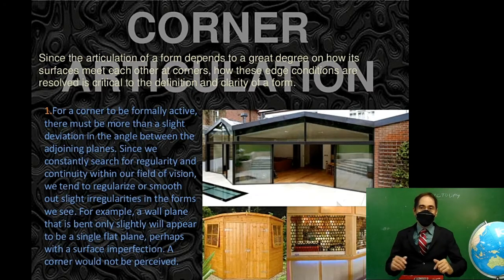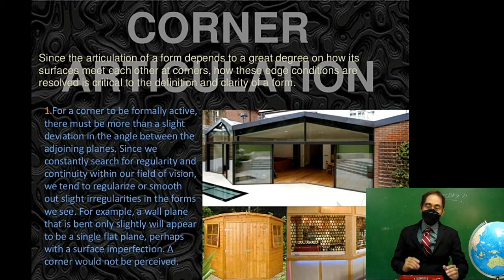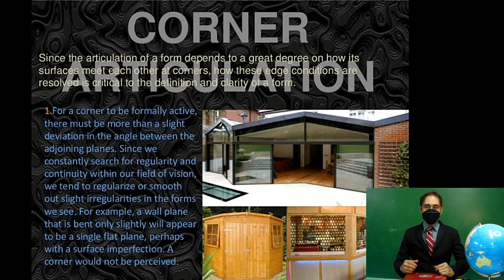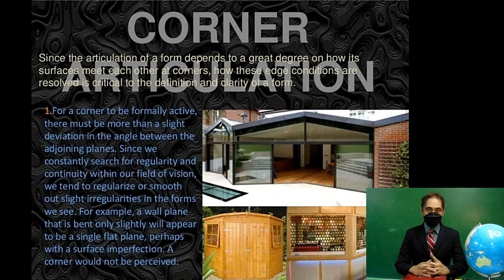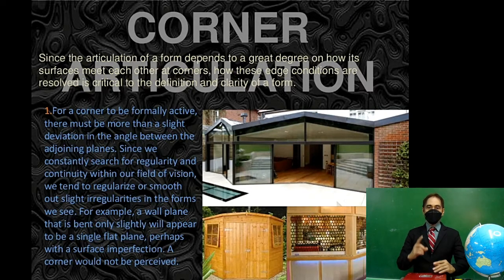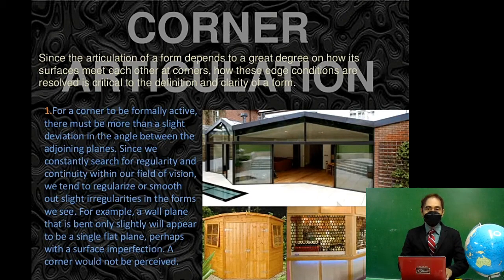How these edge conditions are resolved is critical to the definition and clarity of a form. For a corner to be formally active, there must be more than a slight deviation in the angle between the adjoining planes. Since we constantly search for regularity and continuity within our field of vision, we tend to regularize or smooth out slight irregularities in the forms we see. For example, a wall plane that is bent only slightly will appear to be a single flat plane, and a corner would not be perceived.